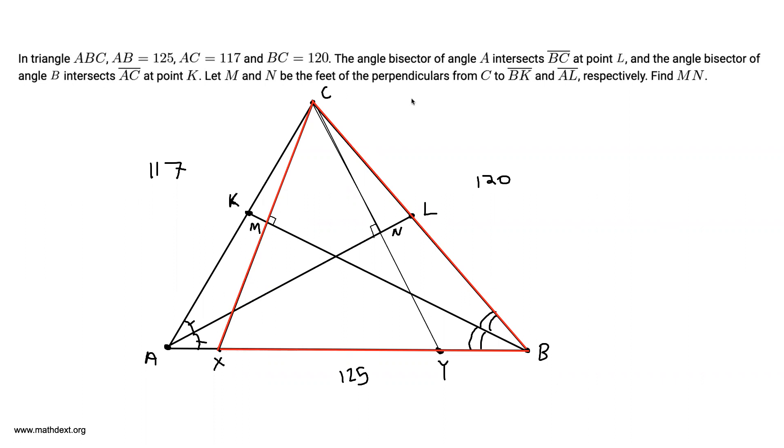Let me write this down. Angle CMB is equal to 90, which is equal to angle XMB. We also have angle XBM is equal to angle CBM. And furthermore we can write BM equals to BM.